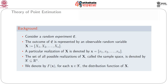Let us consider a random experiment E. The outcome of the random experiment E is represented by an observable random variable vector x, with components x_1, x_2, up to x_n. A particular realization of the vector x is denoted by small x, which equals small x_1, x_2, up to x_n. The set of all possible realizations of the vector x is called the sample space, denoted by script X, and it is a subspace of R to the power n. We denote by capital F of x vector, for x belonging to script X, the distribution function of the vector x.